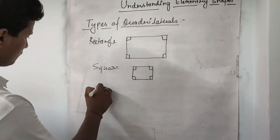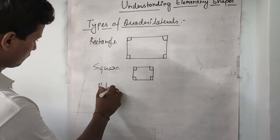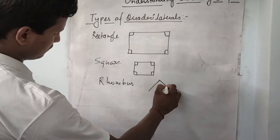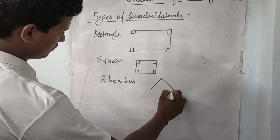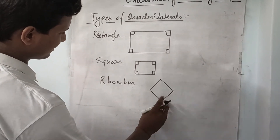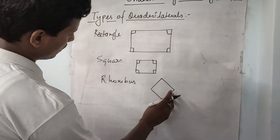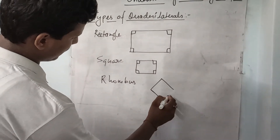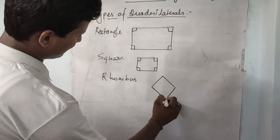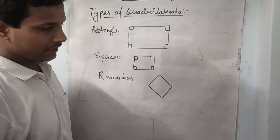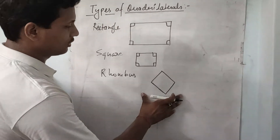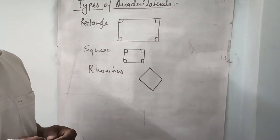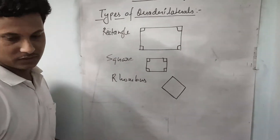Next is rhombus. Here, opposite sides are parallel and all the sides are equal. Opposite angles are also equal. So this is called a rhombus.